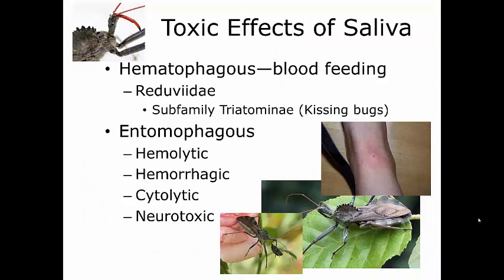Now we're going to focus on insects that feed on animals — the hematophagous group, those that feed specifically on blood. 'Hema' means blood, 'phagous' means feeding. There is one major family that affects animals: the Reduviidae, commonly called the cone-noses, assassin bugs, or kissing bugs. Kissing bugs fall into one subfamily, the Triatominae. These are the major vectors for different types of diseases.